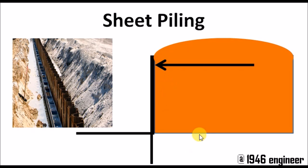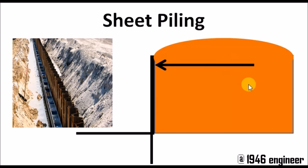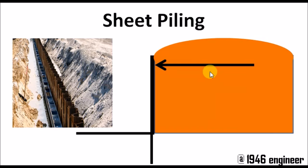So what is sheet piling? It is nothing but sheets of steel that are driven into the ground to prevent the backfill from entering into the excavated portion — it gives stabilization to the backfill. This is the place where we need to do construction, so we excavated this area and we have backfill here. We don't want this backfill to come into this place, so what we do is a retaining-wall-like structure — we do sheet piling. This kind of interlocked steel sheet mechanism is driven into the ground, preventing the backfill from entering.